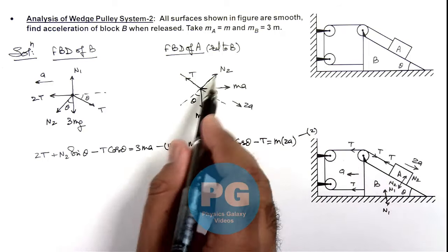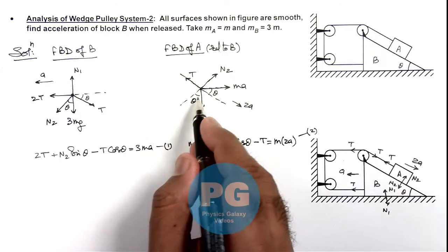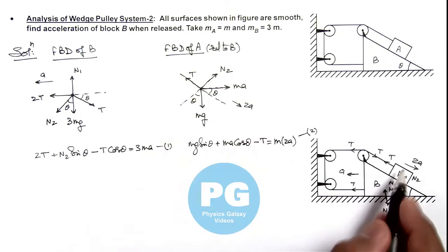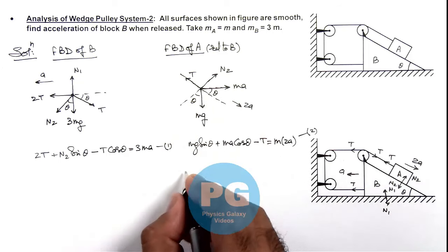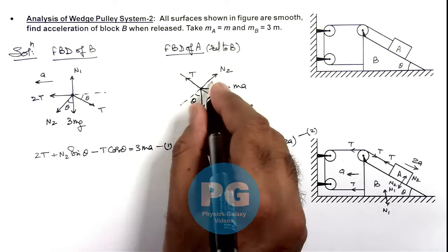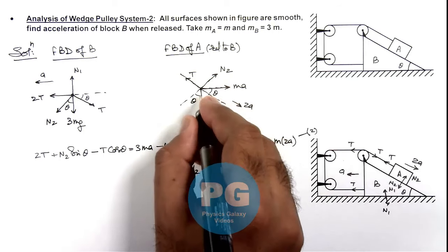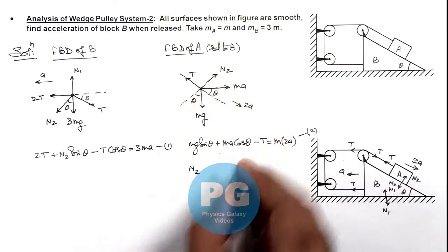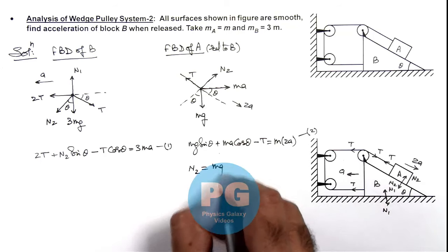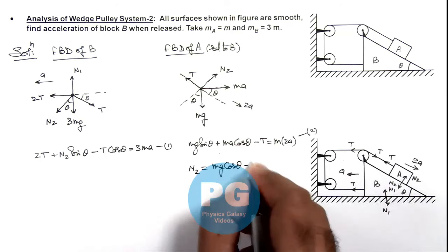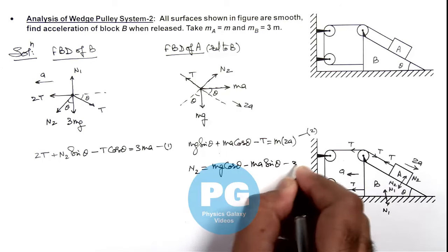In the direction normal to the inclined surface, since block A is not moving perpendicular to B, we can balance the forces: N2 + m·ay·sinθ = m·g·cosθ. Therefore, the value of N2 = m·g·cosθ − m·ay·sinθ. This is Equation 3.